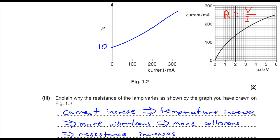So as the electrons are trying to go through the filament, they will be faced with more collisions. More collisions means more resistance. So overall, as the current increases, the resistance of the filament will increase.